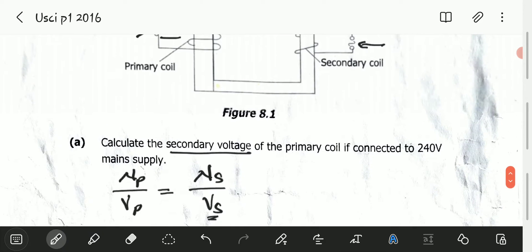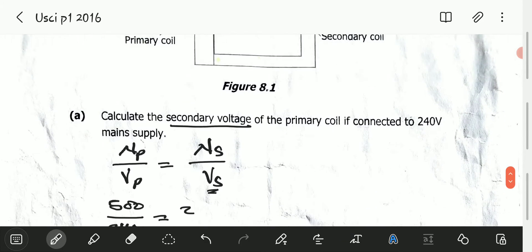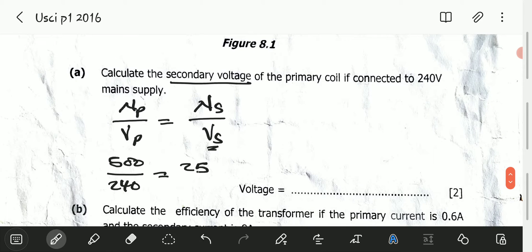Which is 25, divided by voltage in the secondary. I cross multiply this: 500 multiplied by voltage in the secondary equals 240 multiplied by 25. I'll divide through by 500.